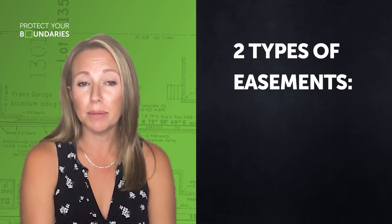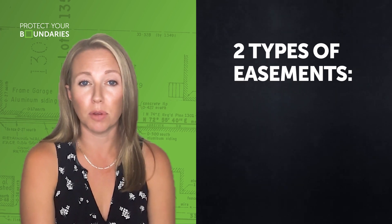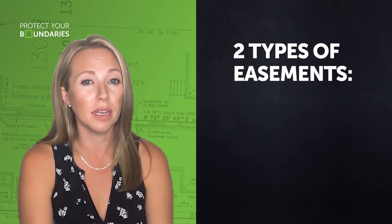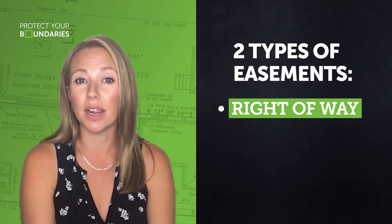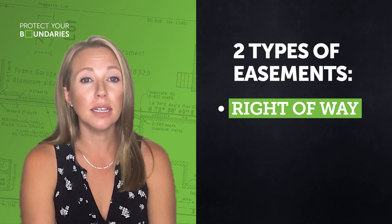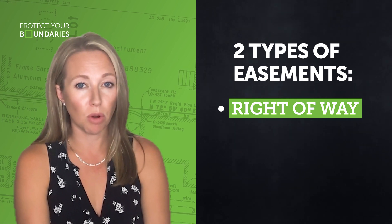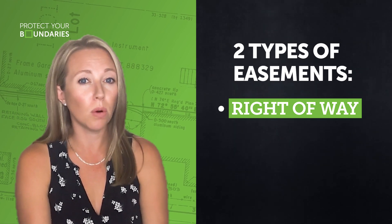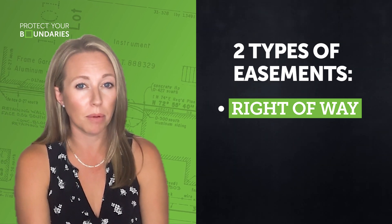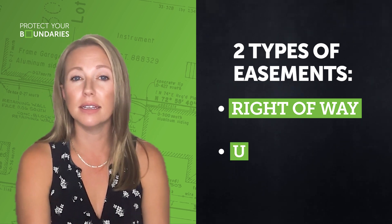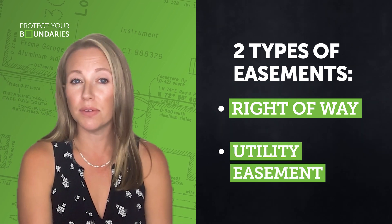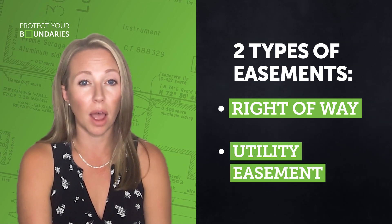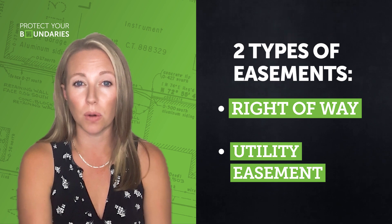There are two types of easements that you will most commonly come across on your land survey plan. The first is a right-of-way, which allows a neighboring property to use a portion of your property or vice versa. The second is a utility easement, which provides access to hydro, phone, and internet infrastructure.